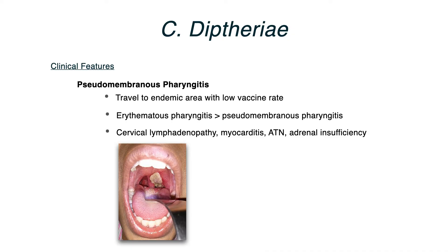If you see a grayish pseudomembranous pharyngitis, the answer is 100% diphtheria. There are associated systemic symptoms — cervical lymphadenopathy, myocarditis, acute tubular necrosis, and adrenal insufficiency. Because these span multiple organ systems (heart, kidney, adrenal), lab abnormalities in the question might make you second-guess yourself, but don't — the pseudomembranous pharyngitis is definitive.